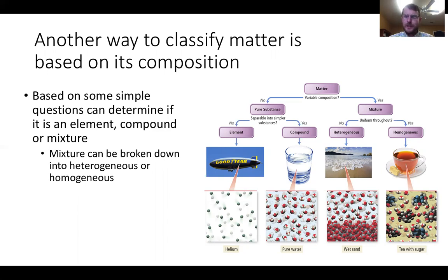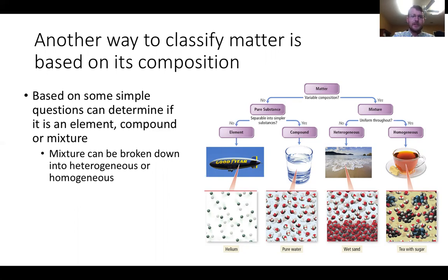On the pure substance side, an element appears on the periodic table and cannot be broken down into anything simpler. If it can be broken down, it's a compound. Water is a compound — it can be separated into hydrogen and oxygen. You'll have a periodic table available in the lab and on each exam. If the matter you're looking at appears on the periodic table as an element, that's what it is.